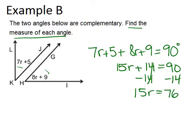When you divide both sides by 15 in order to solve, we end up with our answer that r equals 5.067, and I did round that answer.